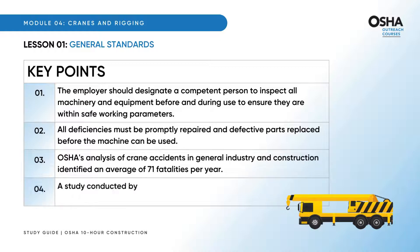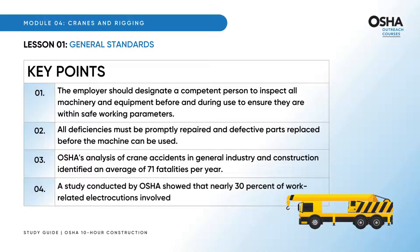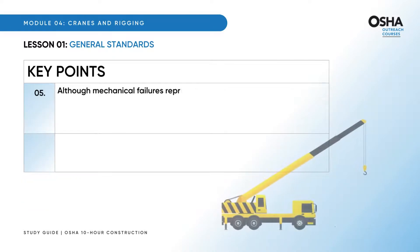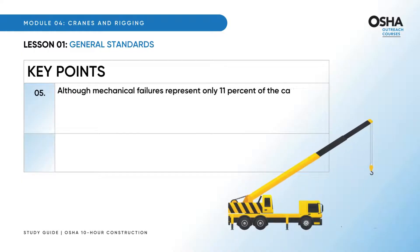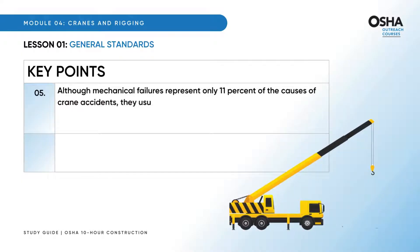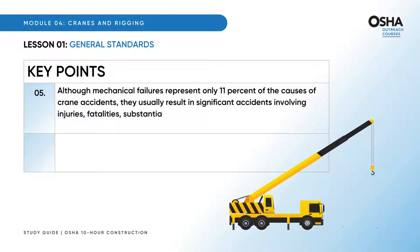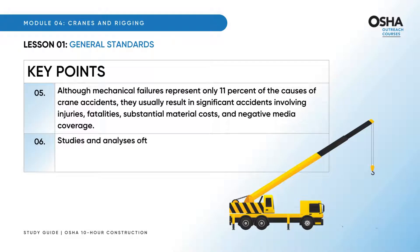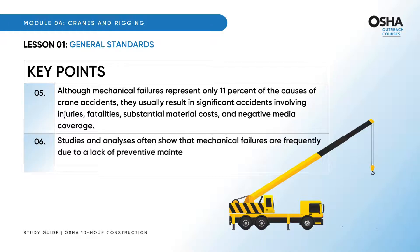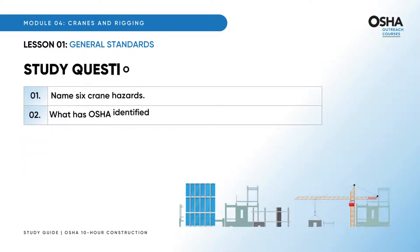A study conducted by OSHA showed that nearly 30 percent of work-related electrocutions involved cranes. Although mechanical failures represent only 11 percent of the causes of crane accidents, they usually result in significant accidents involving injuries, fatalities, substantial material costs, and negative media coverage. Studies and analyses often show that mechanical failures are frequently due to a lack of preventive maintenance or adequate training and personnel experience. Now look at the study question.